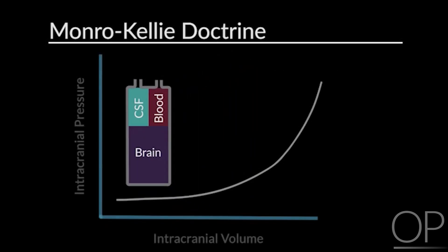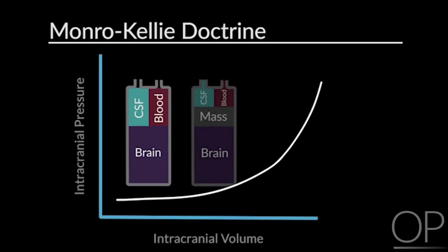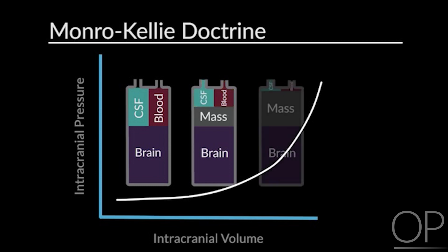For example, when a lesion such as an epidural hematoma adds to the brain volume, there are compensatory decreases in CSF and venous volume, as you can see here. However, at a critical point, the CSF and blood buffers are not able to compensate for changes in cranial compartment volume.